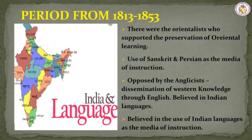Period from 1813 to 1853. The second period was marked by great educational controversies. First, there were the Orientalists, who supported the preservation of Oriental learning and the use of Sanskrit and Persian as the media of instruction. They were opposed by the Anglicists — experts in English — who advocated dissemination (spreading) of western knowledge through English. A third section believed in the use of Indian languages as the media of instruction. The controversies continued till 1854.